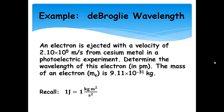All right. So, here's an example calculation. So, pause the presentation and give this a try. So, we have an electron that's ejected with a velocity of 2.10 times 10 to the 5th meters per second from cesium metal in a photoelectric effect experiment. Determine the wavelength of the electron in picometers. And you have the mass given there. And also, remember that 1 joule is equal to 1 kilogram meter squared over second squared.